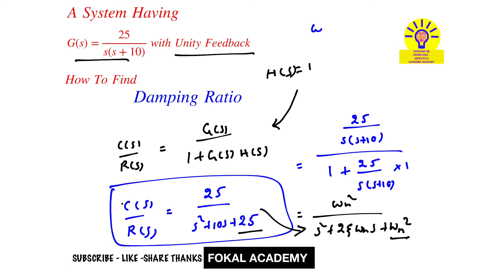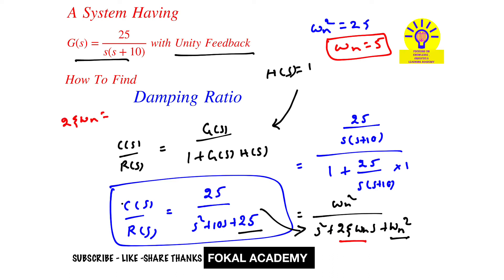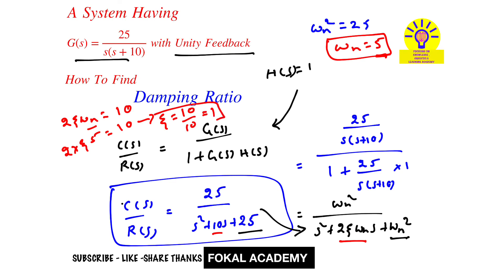From the s coefficient, 2ζωn = 10. Substituting ωn = 5: 2 · ζ · 5 = 10, which gives ζ = 10/10 = 1. Therefore, the damping ratio for the given problem is ζ = 1.